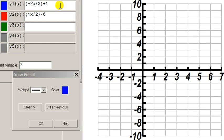Welcome. Let's find the point of intersection for these two lines by graphing them using the slope y-intercept method. Line 1 is negative 2 thirds x plus 1. Line 2 is 1 half x minus 6.